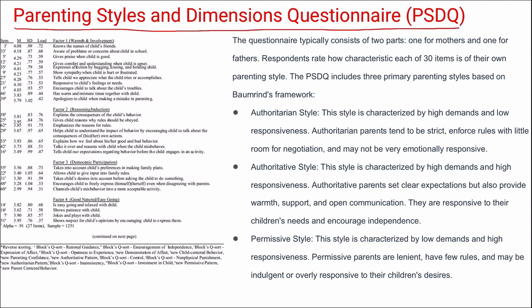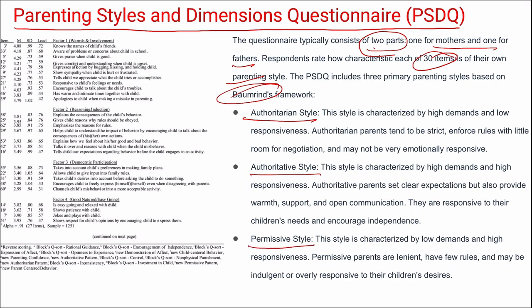Next is the Parenting Styles and Dimensions Questionnaire (PSDQ), which has two parts — one for mothers and one for fathers — with respondents rating 30 items about their parenting style. It includes three primary styles based on Baumrind's framework: authoritarian (high demands, low responsiveness — strict with few negotiations), authoritative (high demands, high responsiveness — clear expectations with warm support and open communication), and permissive (low demands, high responsiveness — lenient with few rules).